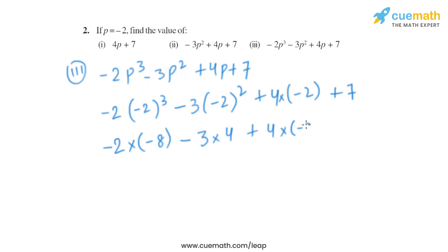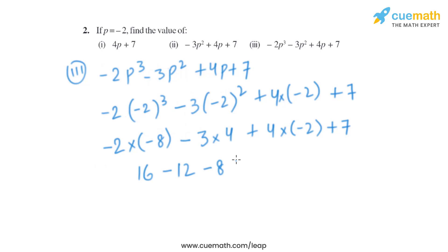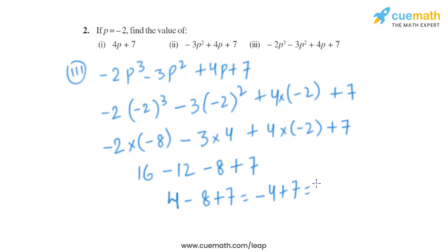Multiplying: minus 2 into minus 8 is 16, 3 into 4 is 12, and 4 into minus 2 is minus 8, plus 7. So 16 minus 12 is 4, then 4 minus 8 plus 7 equals minus 4 plus 7, which gives us 3.